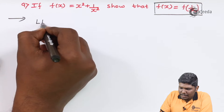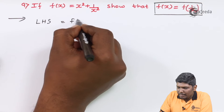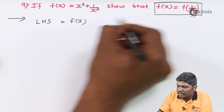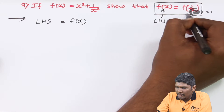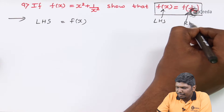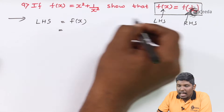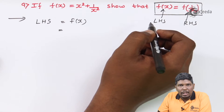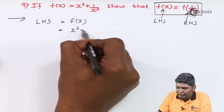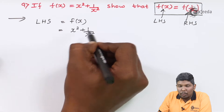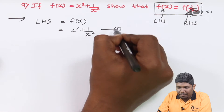So let us start with the LHS. We have f(x) as our LHS, and f(1/x) as our RHS. So what is f(x) here? That is x squared plus 1 upon x squared. You can take this as equation number 1.